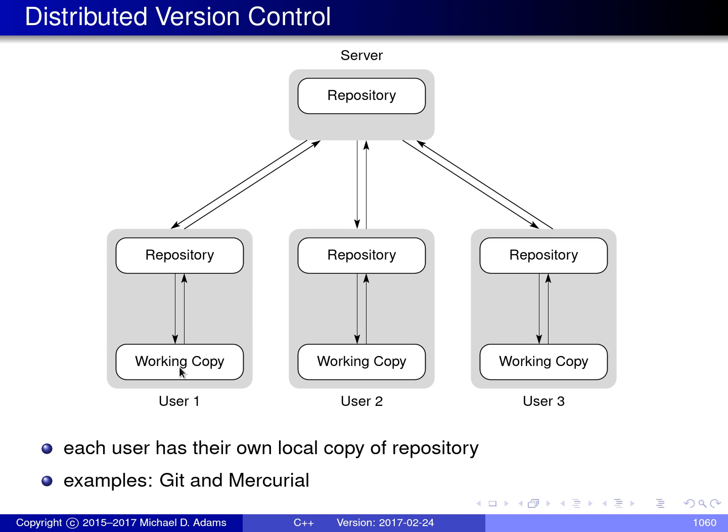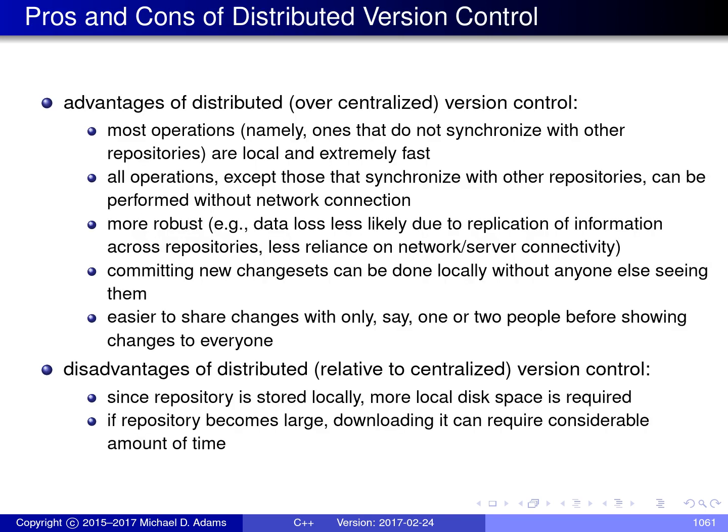Some examples of distributed version control systems are Git and Mercurial. Given that we have two different approaches — centralized and distributed — one might wonder what the advantages and disadvantages of each are. As it turns out, distributed version control has many advantages over its centralized counterpart. In particular, most operations are local and extremely fast, because in practice most operations only need information available in the local repository, which can be accessed very quickly.